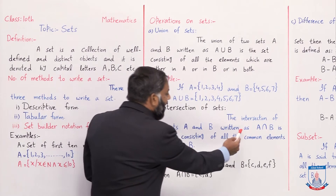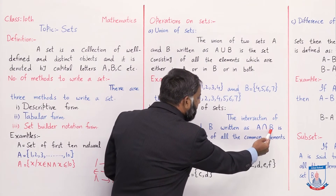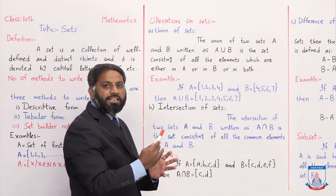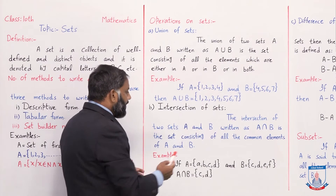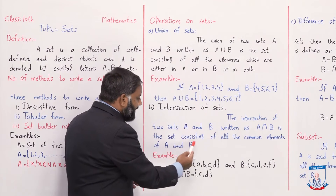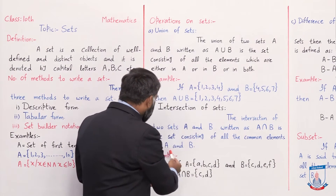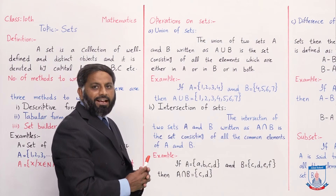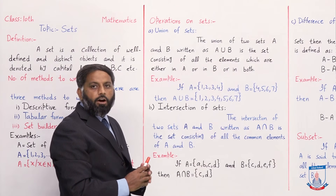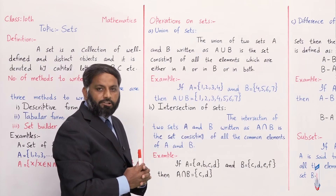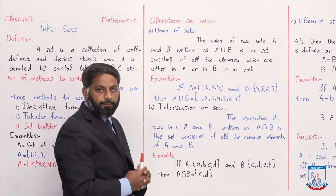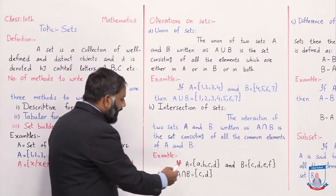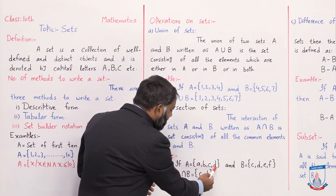Next: intersection of sets۔ The intersection of two sets A and B, written as A ∩ B (intersection کے symbol میں U کو الٹا کر کے لکھیں گے), is the set consisting of all the common elements of A and B۔ Intersection میں A اور B کے جو same elements ہوں گے صرف وہ لکھے جائیں گے۔